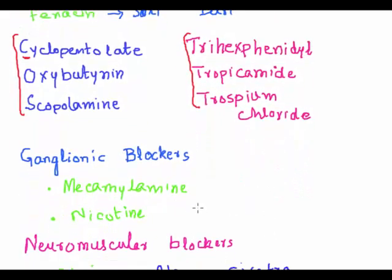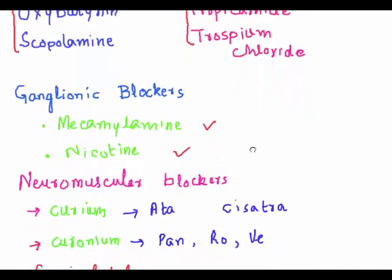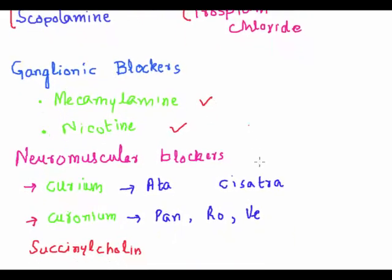Now we move to ganglionic blockers. There are just two drugs in this category: mecamylamine and nicotine.